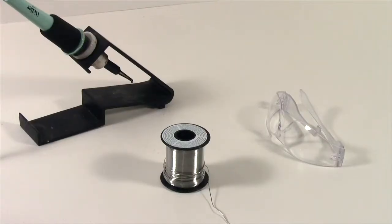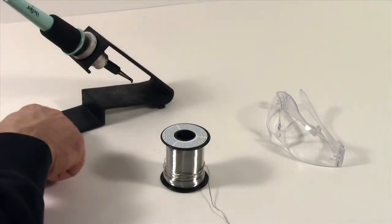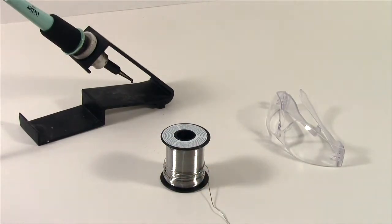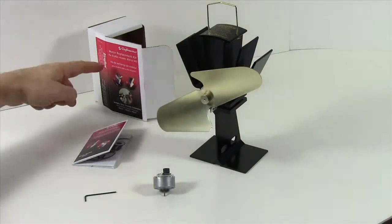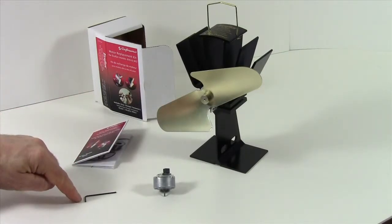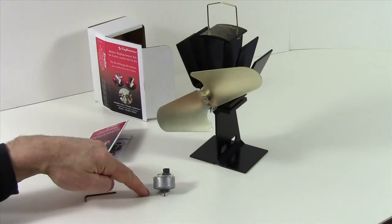For this procedure, you will also require a soldering iron, some solder, and a pair of safety goggles. Now inside the motor kit, you will receive an instruction manual, an allen key, and a brand new motor.